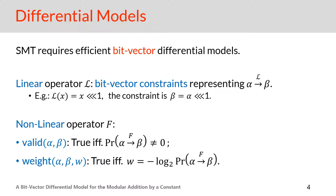SMT needs a bit-vector differential model for each operator. The differential model of any operator includes the constraints representing the propagation of differences through the operation. This can be seen as bit-vector expressions which are equal to true if and only if the conditions of the differential propagation are satisfied. For nonlinear operations, we split the differential model into two parts: first, the validity constraint, which is true if and only if the probability of the given difference propagation is non-zero; and second, the weight constraint, which is true if and only if the minus binary logarithm of the probability is equal to the extra input w.